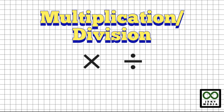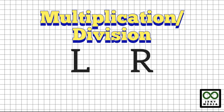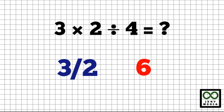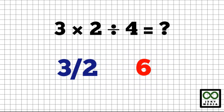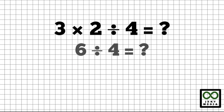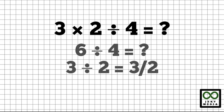Next, we have multiplication and division. In multiplication and division, there is a rule called left to right. This means you have to operate from left to right, whichever comes first. For example, we have 3 times 2 divided by 4. Which is the answer: 3 halves or 6? First, let's multiply 3 times 2 as it comes first. 3 times 2 is 6, divided by 4. Simplifying the numbers will give you 3 divided by 2. The answer is a fraction: 3 halves.